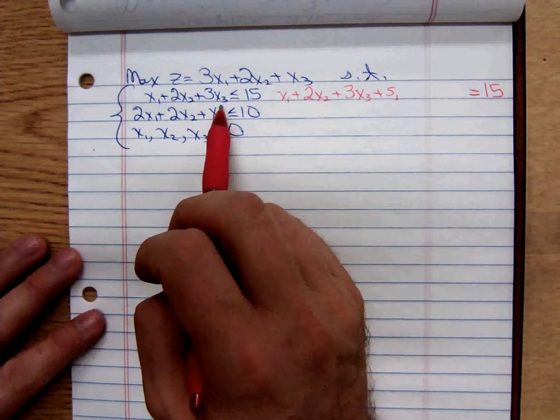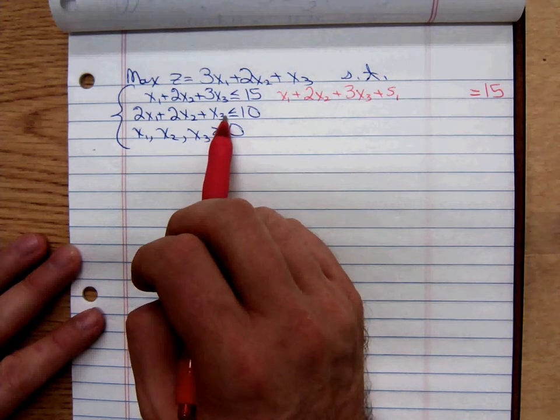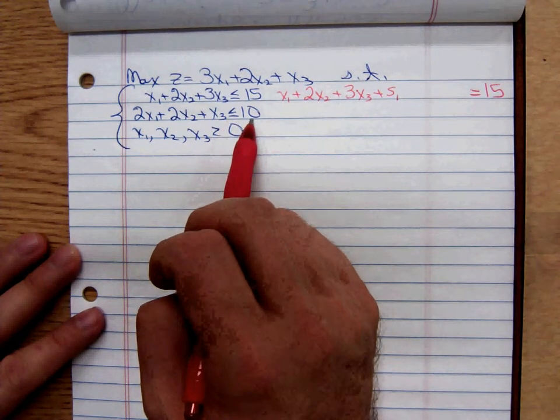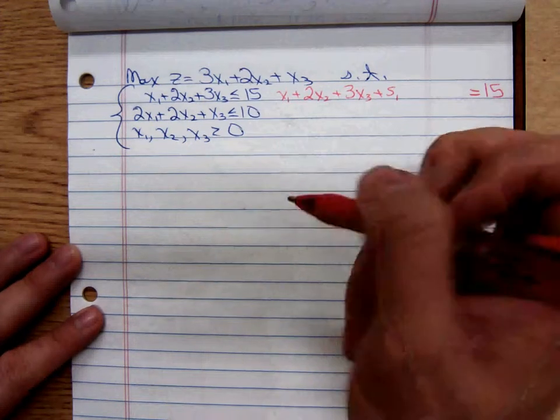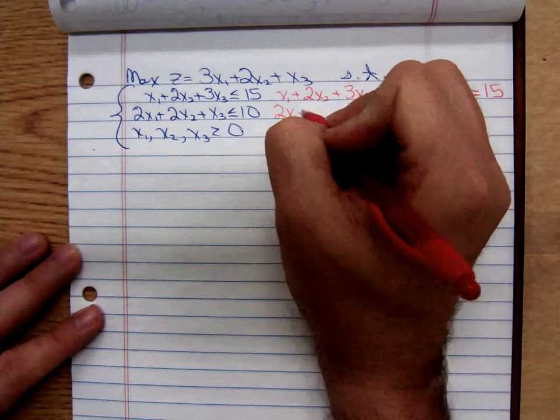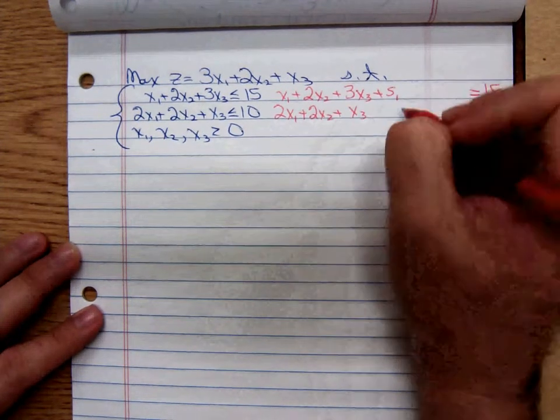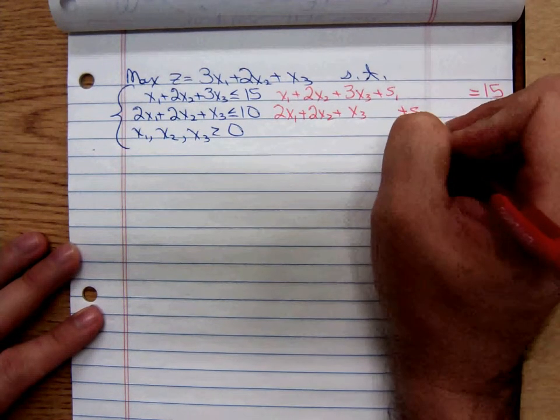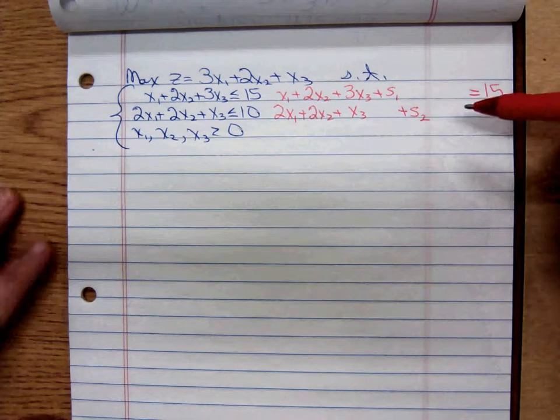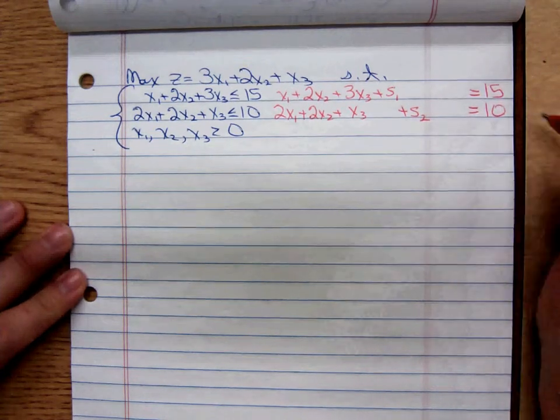Now, the slack variable we use for the first inequality, we don't know it's going to be the same amount you can add to make the left side equal to 10 on the second inequality. So, we're going to have to introduce a different slack variable. 2x1 plus 2x2 plus x3 plus a second slack variable. Notice they're not like terms, so I'm not aligning them. It's going to equal 10.